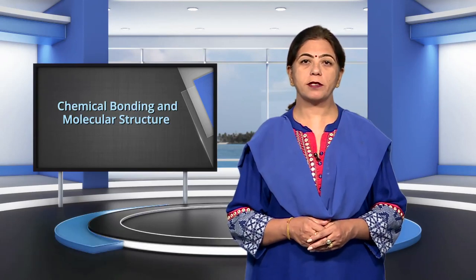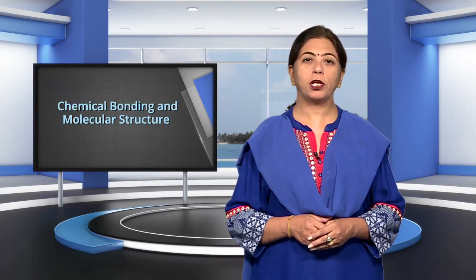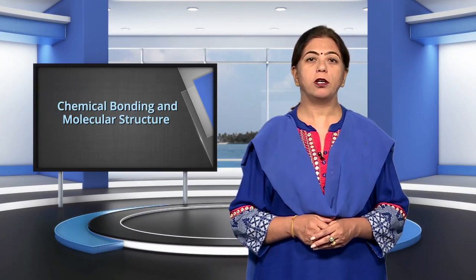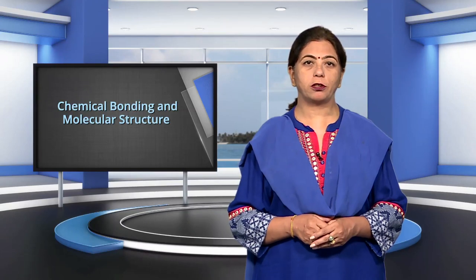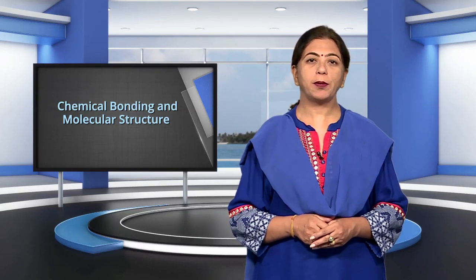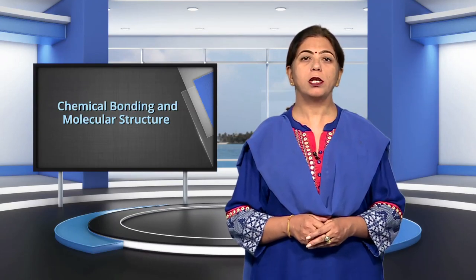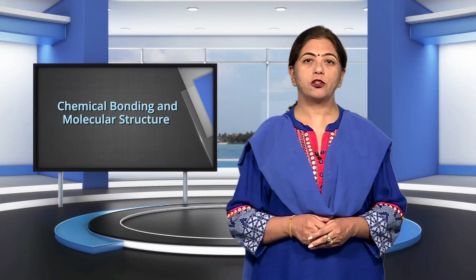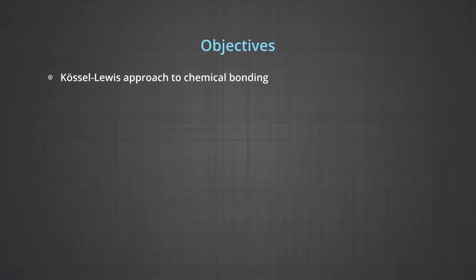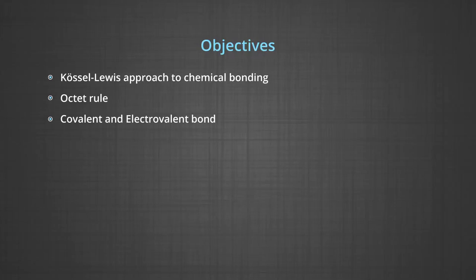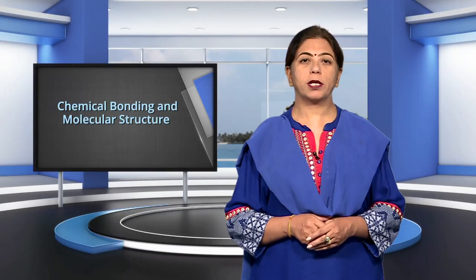Dear students, in the previous classes you have studied about atoms, molecules, atomic structure and electronic configuration. In Unit 4, Chemical Bonding and Molecular Structure of Class 11th, today you will study about the Kossel-Lewis approach to chemical bonding, octet rule, covalent and electrovalent bond, formal charge, and limitations of the octet rule.